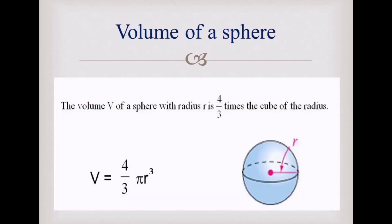Let's find out what is the volume of a sphere. The volume of a sphere equals 4 over 3 multiplied by pi multiplied by r to the power of 3. Pi is a constant value which is equal to 22 over 7, which is approximately equal to 3.14. And r is the radius.